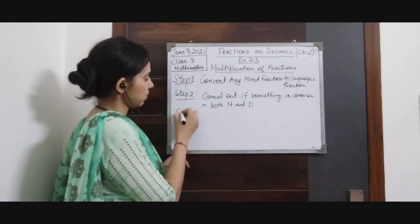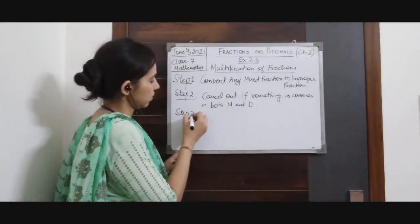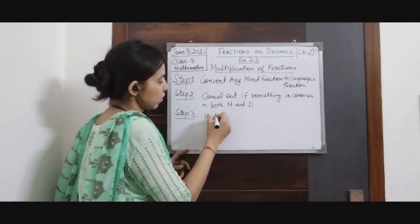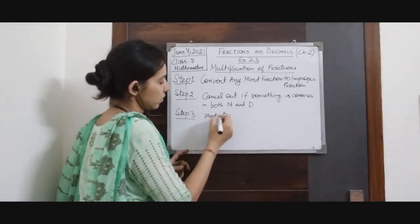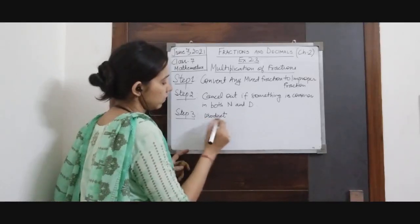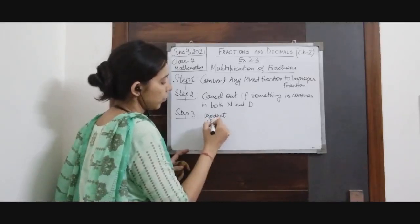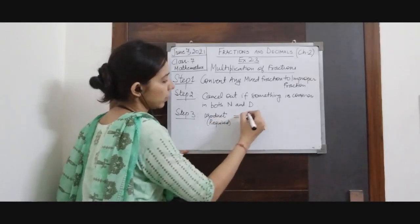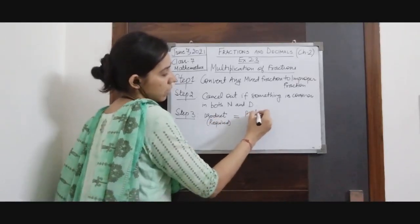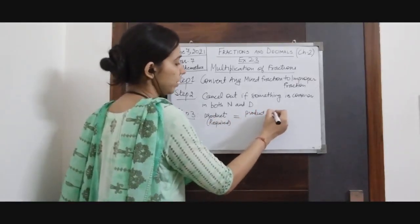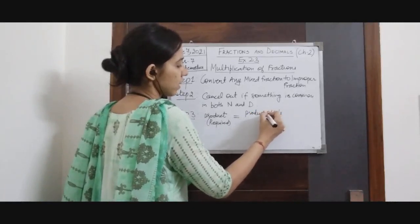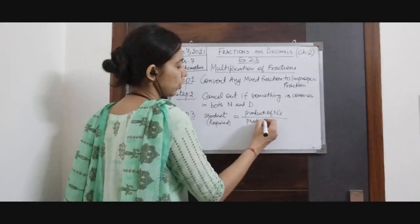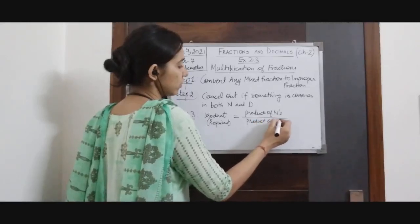Step 3 is: the required product is equal to the product of numerators divided by the product of denominators.